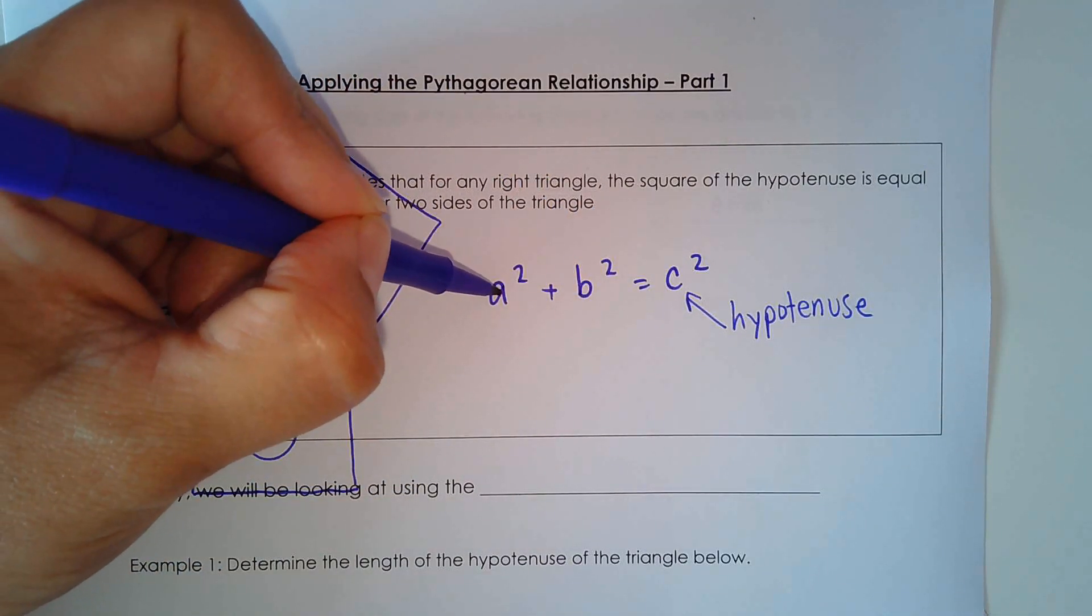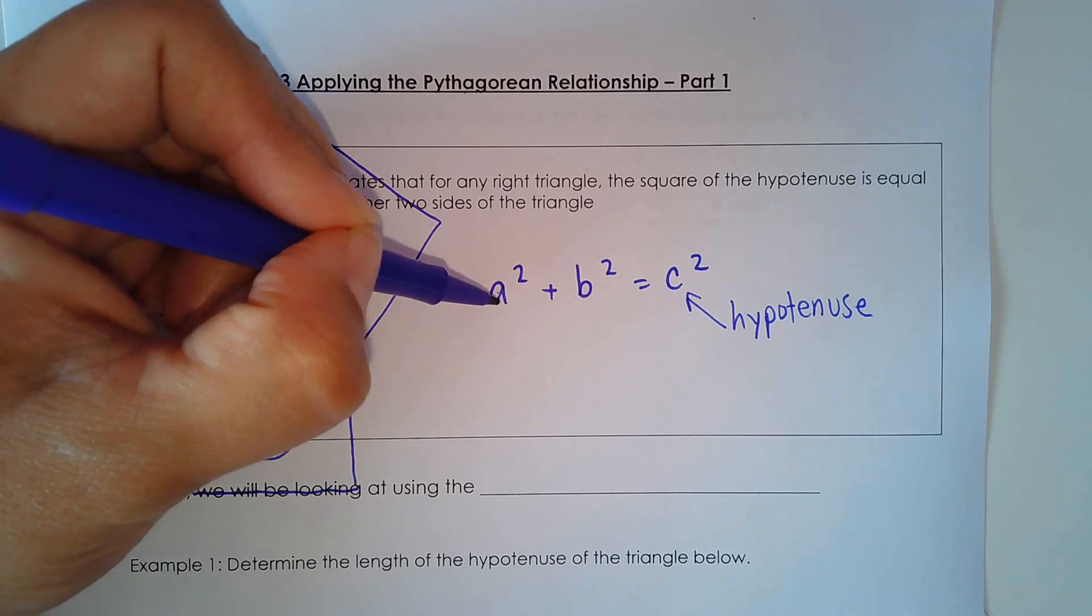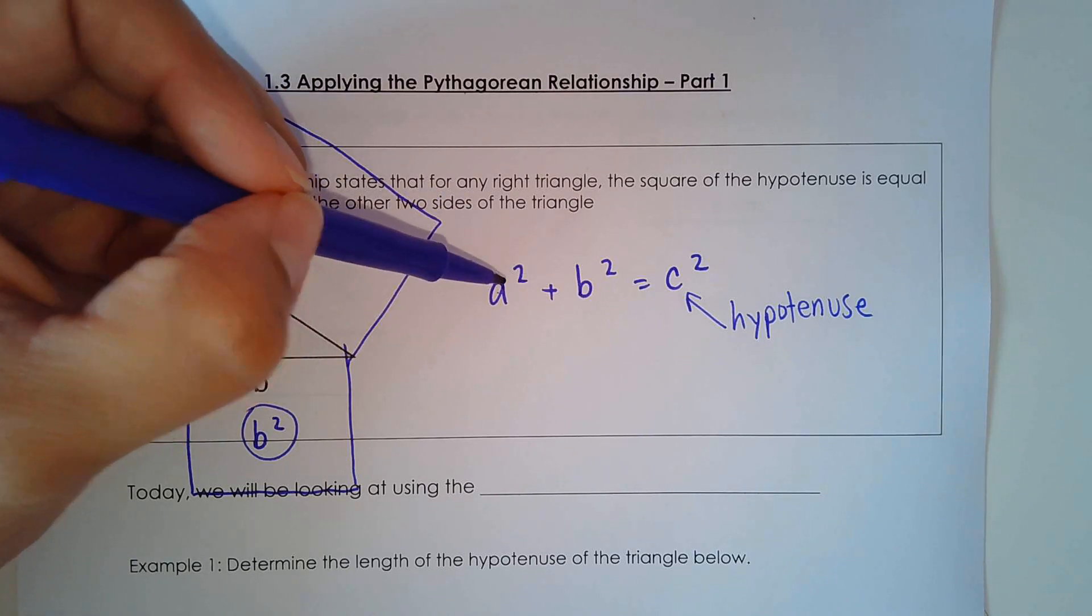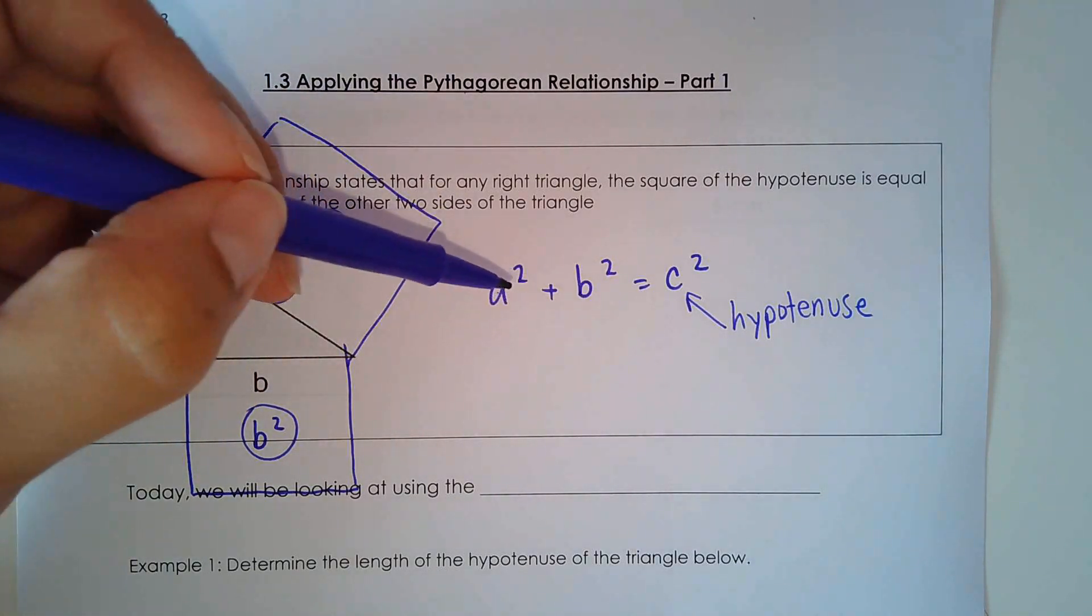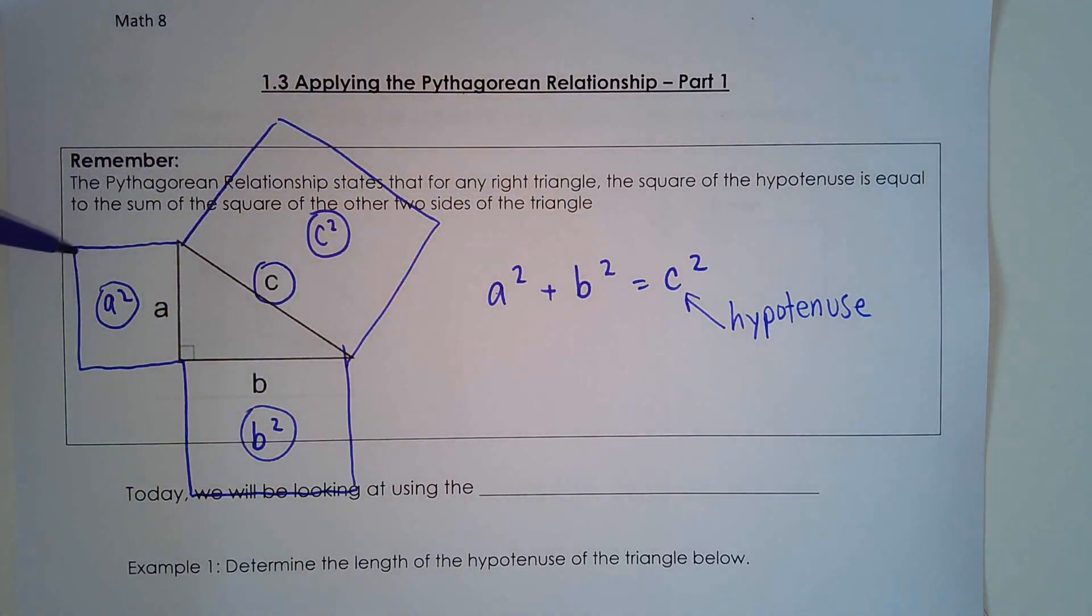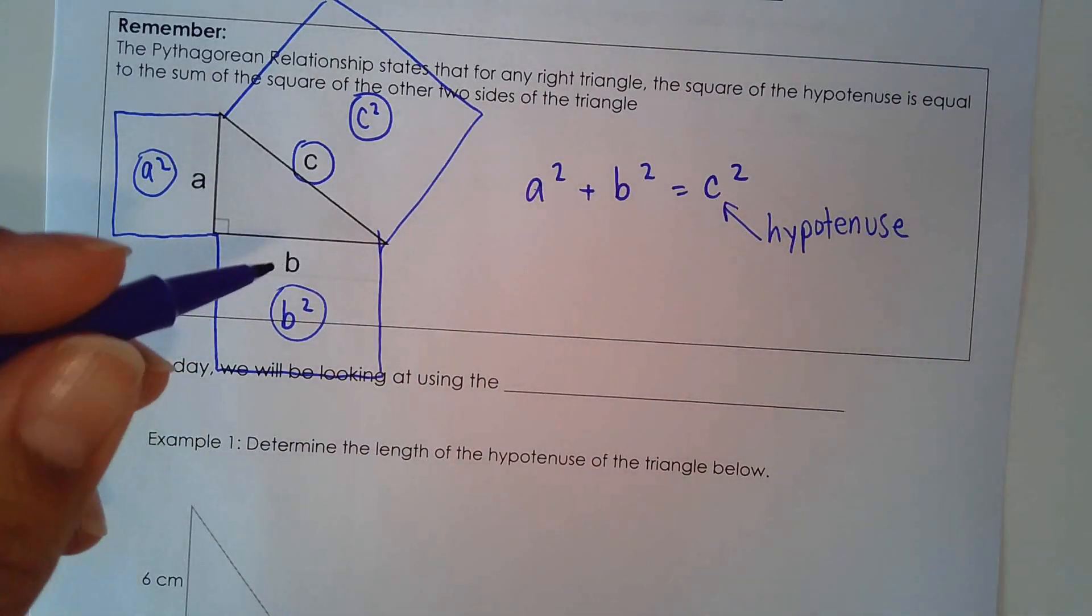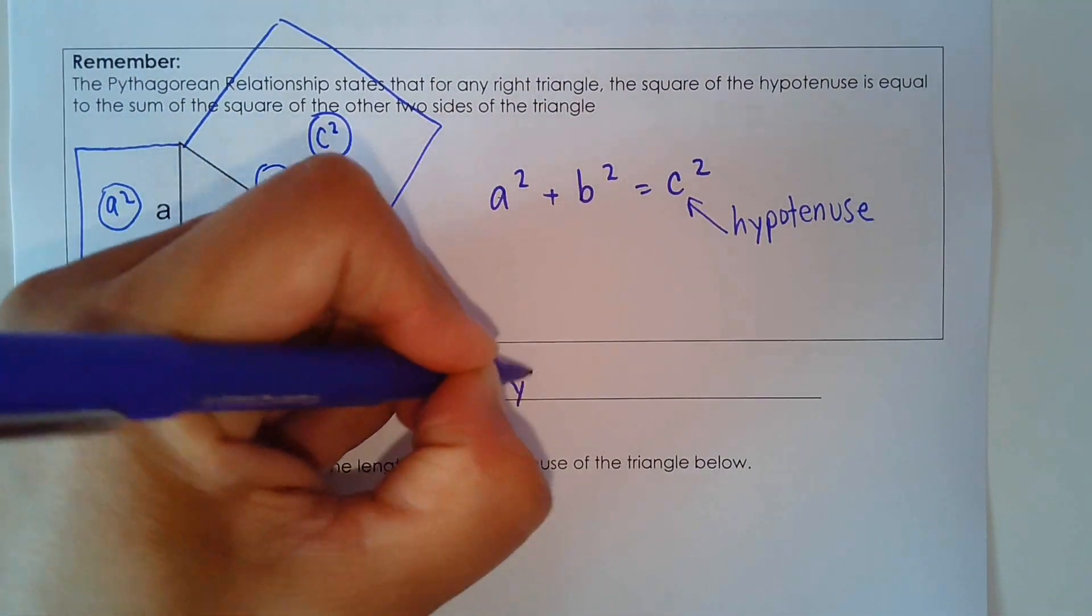So we'll be using this formula today to solve for the missing length in the triangle and you should know what A squared, B squared, and C squared mean. Right? You're looking at the areas of the squares. So today we'll be looking at using the Pythagorean formula.